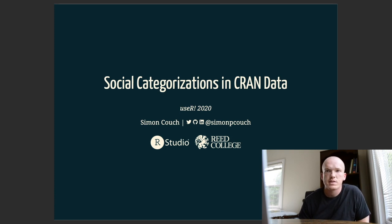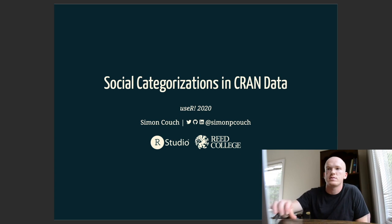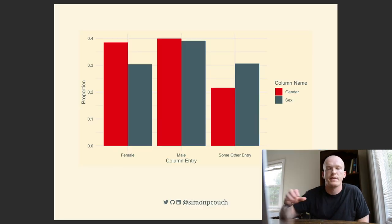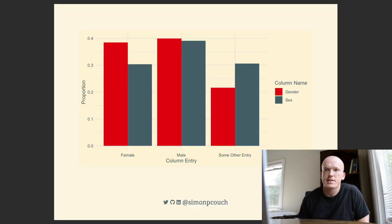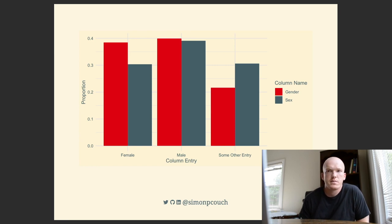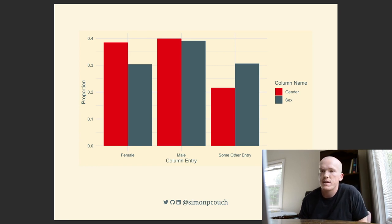I'm just going to share results related to sex and gender here, but I discuss other social categories in the paper. This first figure gets at the question I asked a minute or two ago: is there a relationship between the name of the data column and the entries inside of it?